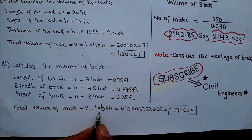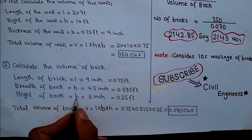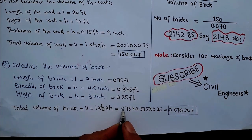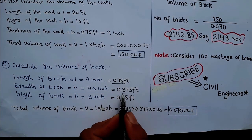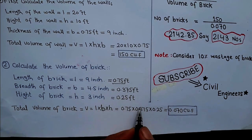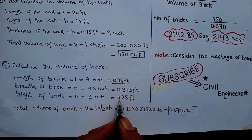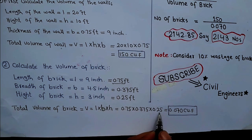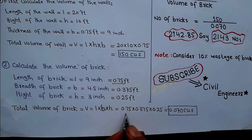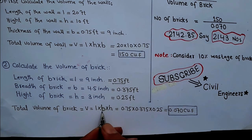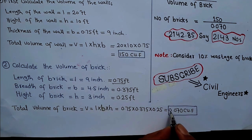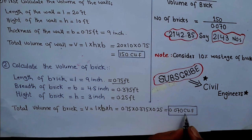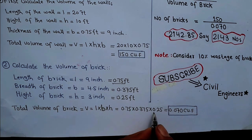The total volume of the brick V = L × B × H = 0.75 feet × 0.375 feet × 0.25 feet. When you multiply these three values with each other, it gives you the volume of the brick: 0.070 cubic feet.